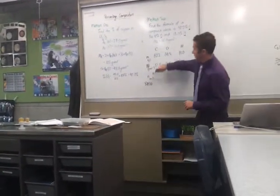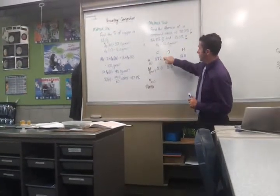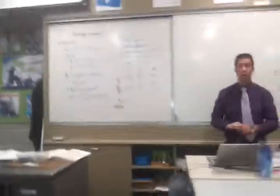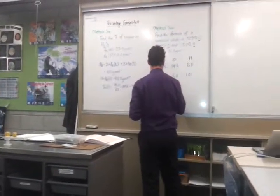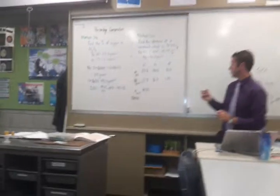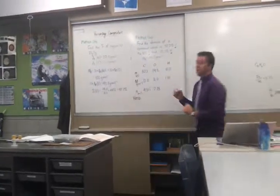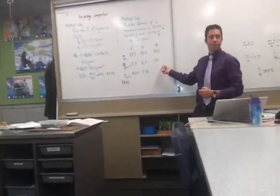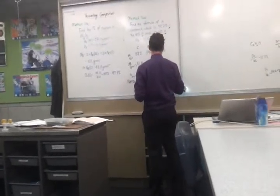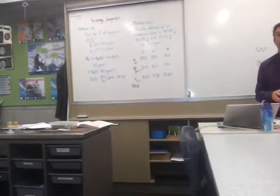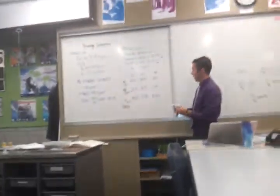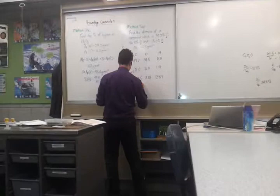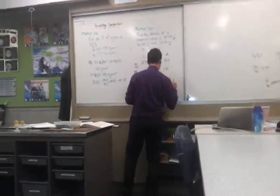All I have to do now is calculate the amount, or number of moles, which is mass divided by molar mass. So 52.2 over 12 gives 4.35. Then 34.8 divided by 16 gives 2.18. And 13.0 divided by 1.01 gives approximately 12.87. To get a ratio, we want one of these numbers to be 1 if possible, so we're going to divide by the smallest number. The smallest number here is 2.18.